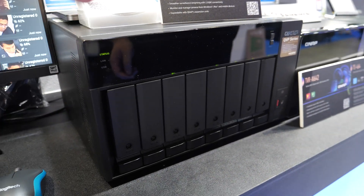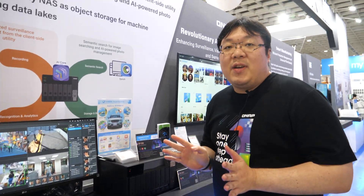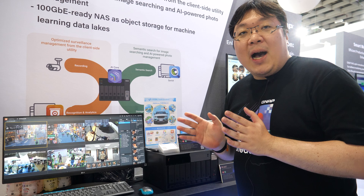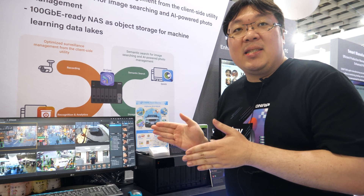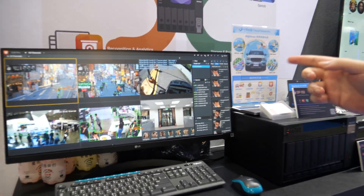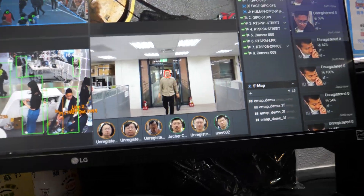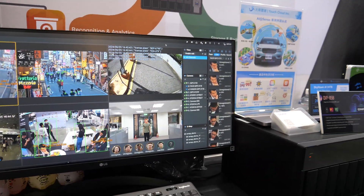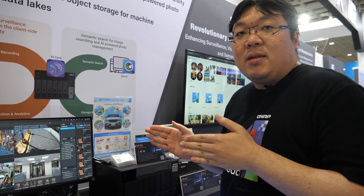We have two ways to analyze video. The first is pre-processing — analysis performed while the video is being recorded. The second is post-processing — analyzing already recorded video. Our demo here is primarily pre-processing, so when people come in, the result is displayed right away on screen, helping security personnel respond in time.